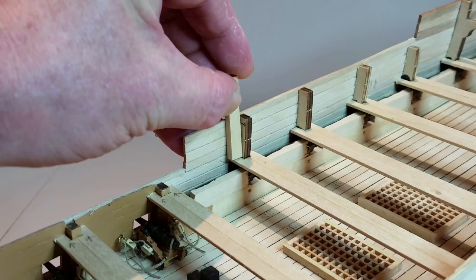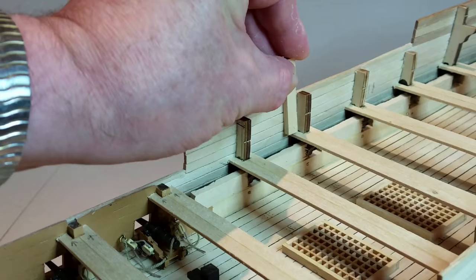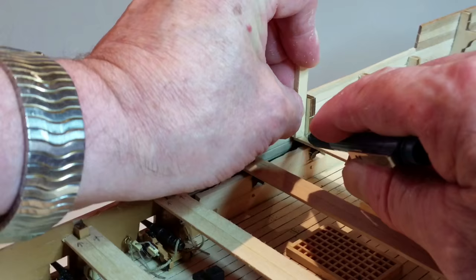The frames need to be reduced to 3mm thick. Glue two scraps of 1.5mm strip together to form a 3mm gauge. Then use this to mark a line 3mm from the outer planks on frames 7, 12 to 16, and 22 to 25.